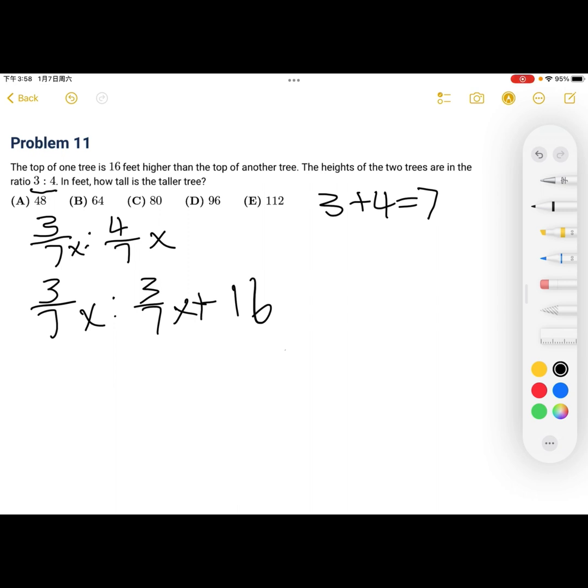Okay. Now, we're trying to find the height of the taller tree. So what we can do is, since this entire equation here is equal to x, we can just add everything. So x equals 3 sevenths x plus 3 sevenths x plus 16.